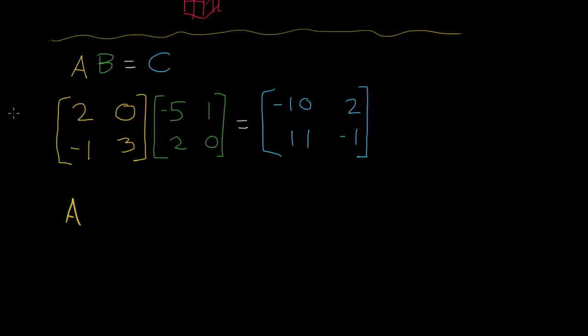So A_IJ, so these are both indices, then B_JK equals C_IK. And then we actually need to sum over this, summing over J.